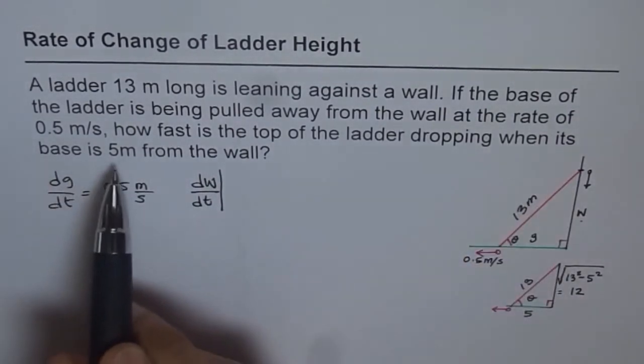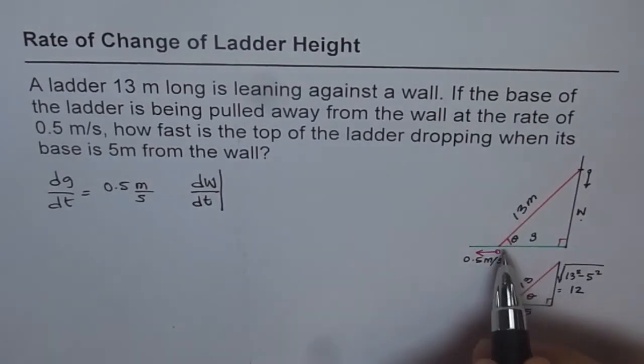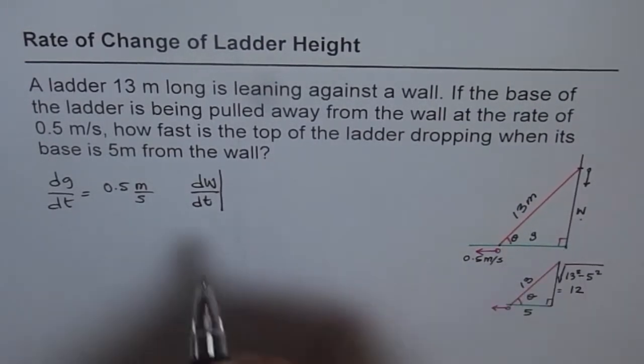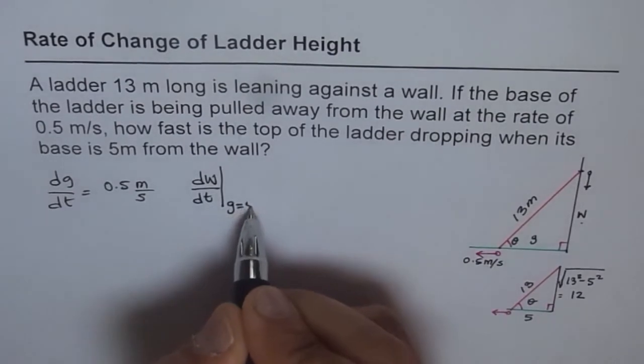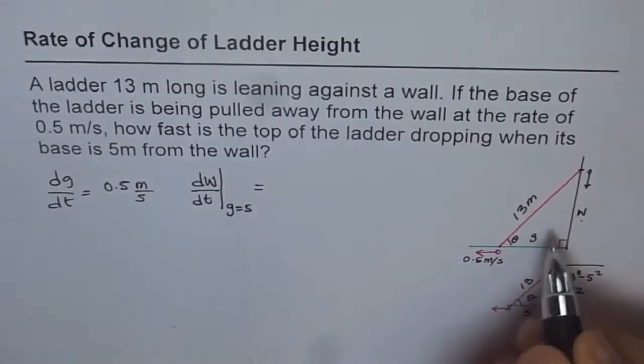When its base is 5 meters from the wall, at the instance when this distance is 5 meters from the wall, we will write that as G equals 5. Get used to different kinds of variables.